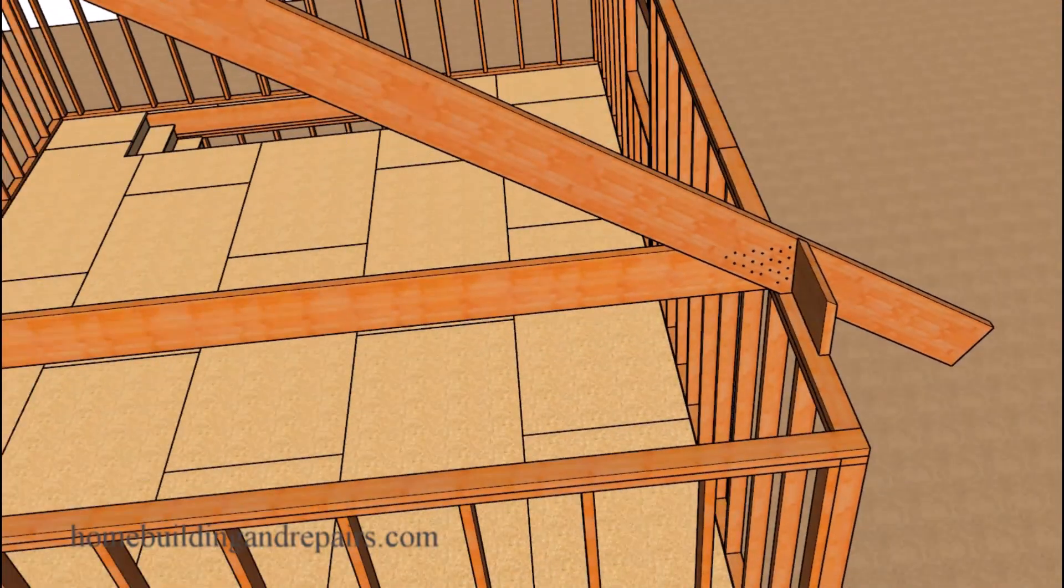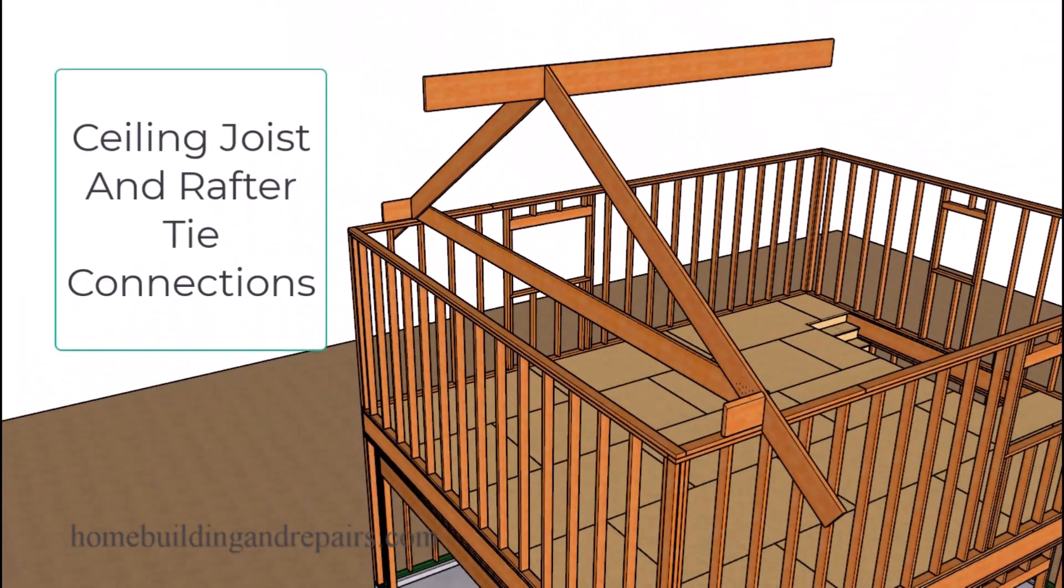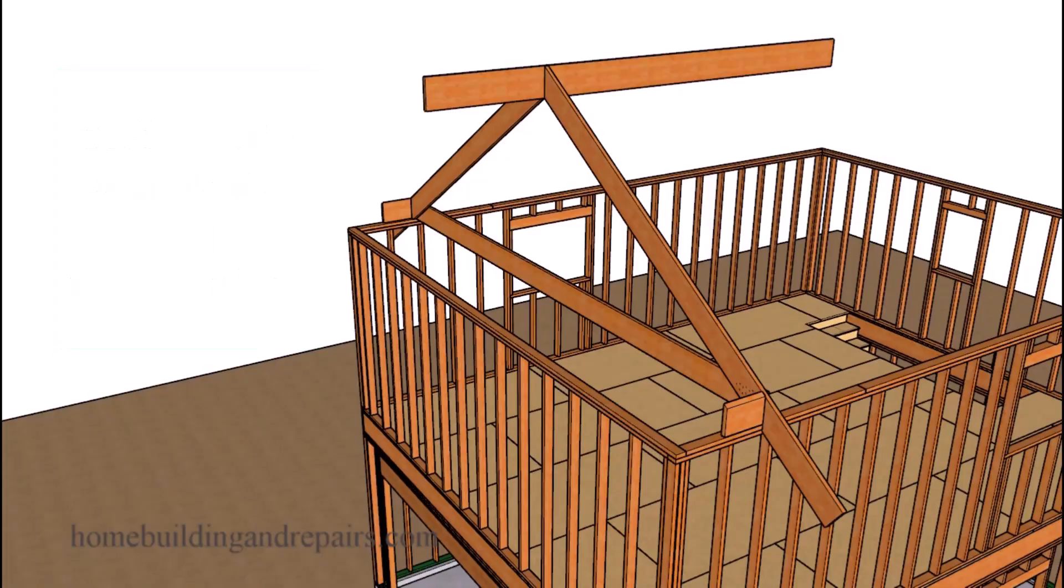Now how do you find out how many nails you're going to need? Simply go to your favorite search engine and type in the words ceiling joist and rafter tie connections. And it should take you to a chart. And in the chart, you're going to look for your rafter slope, how far apart the rafter ties or ceiling joist are going to be spaced, or their on center spacing, then the live load or the snow loads, and then the span of the building.